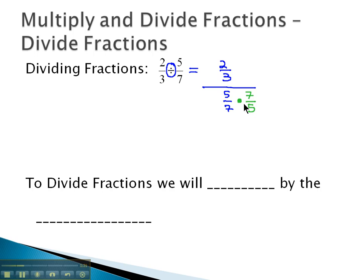However, if we multiply by 7 fifths on the bottom to keep the equal value, we're gonna multiply by 7 fifths in the numerator.